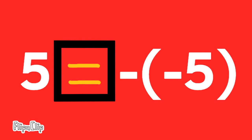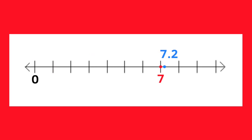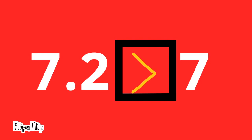5 compared to the opposite of negative 5. 5 is equal to the opposite of negative 5, since the opposite of negative 5 is the same as positive 5. 7 and 2 tenths compared to 7. 7 and 2 tenths is further to the right on the number line than 7, making 7 and 2 tenths greater than 7.